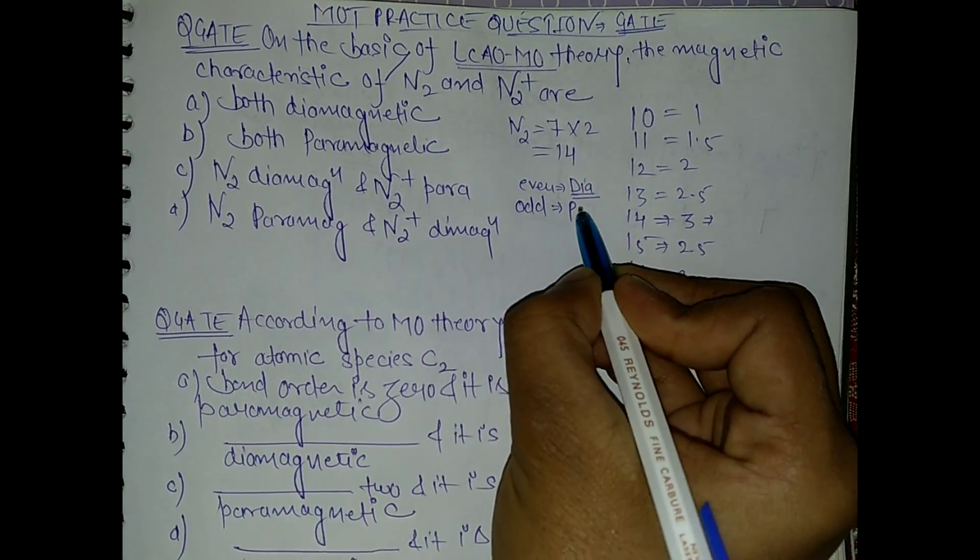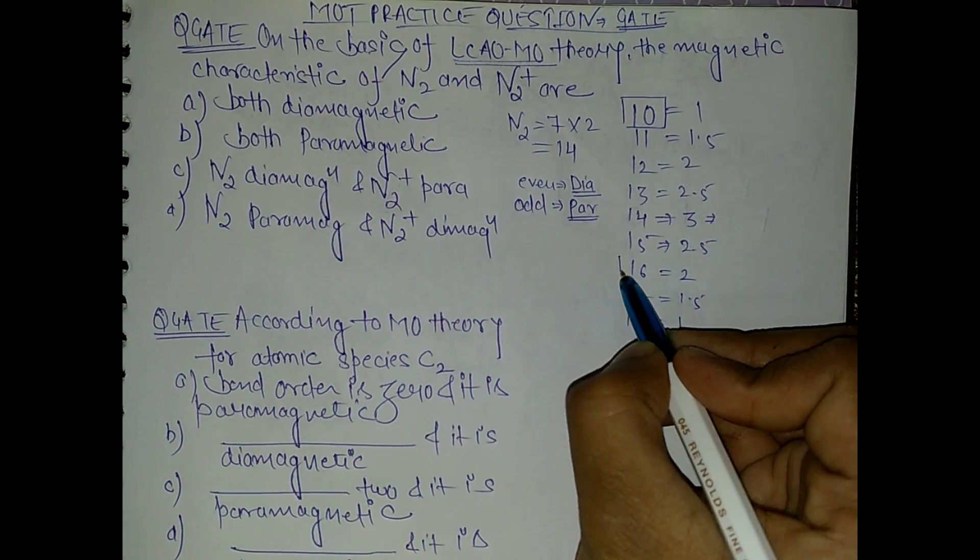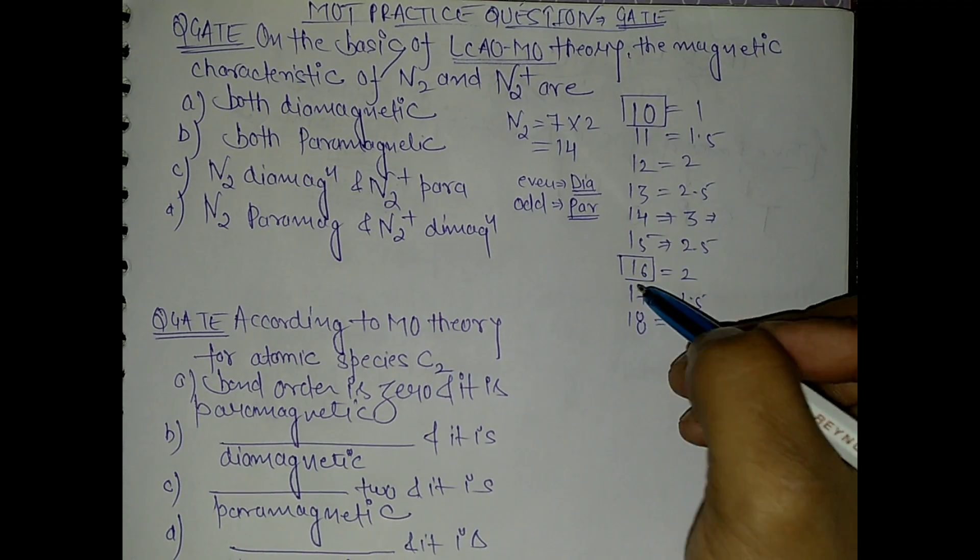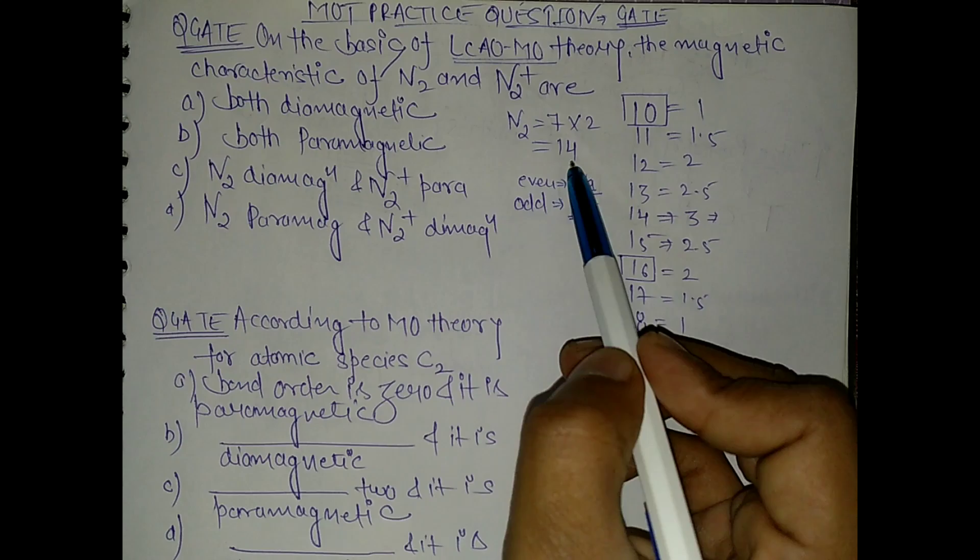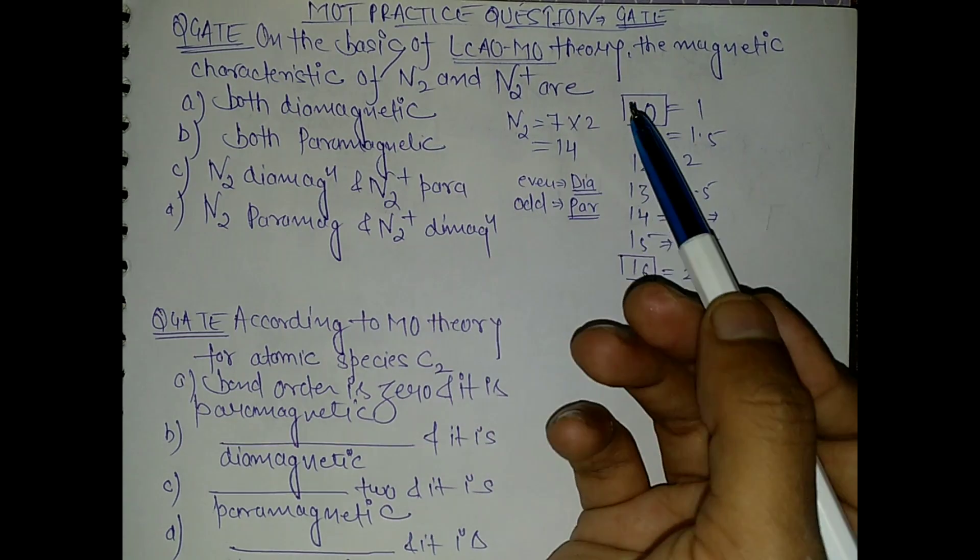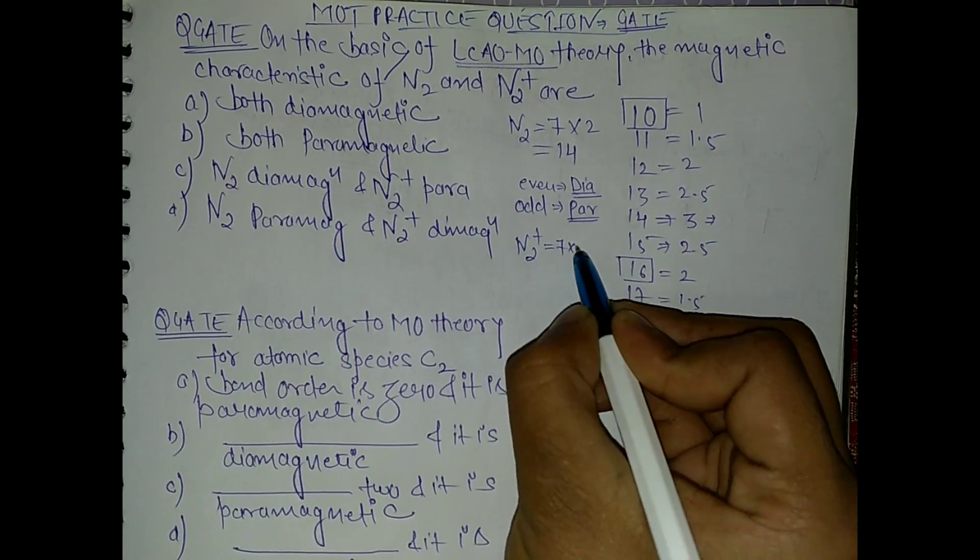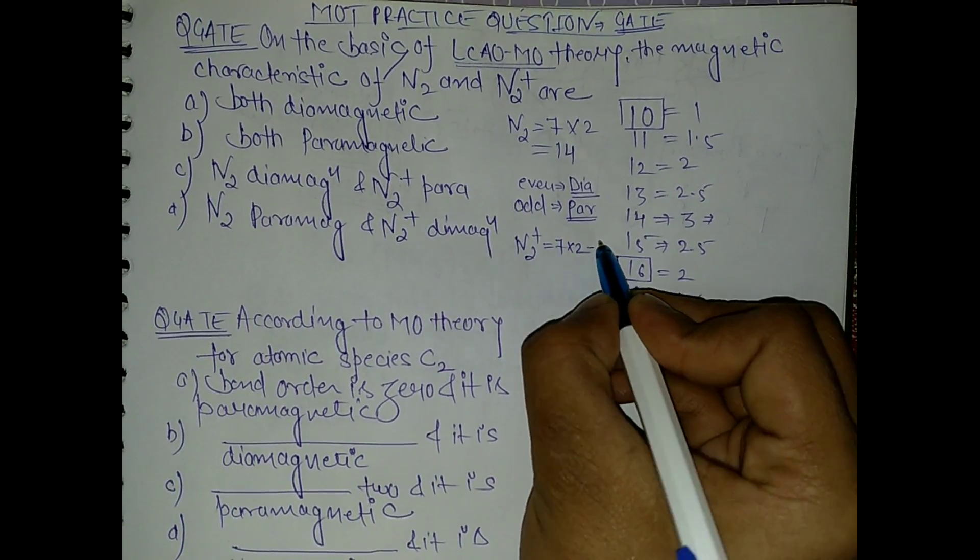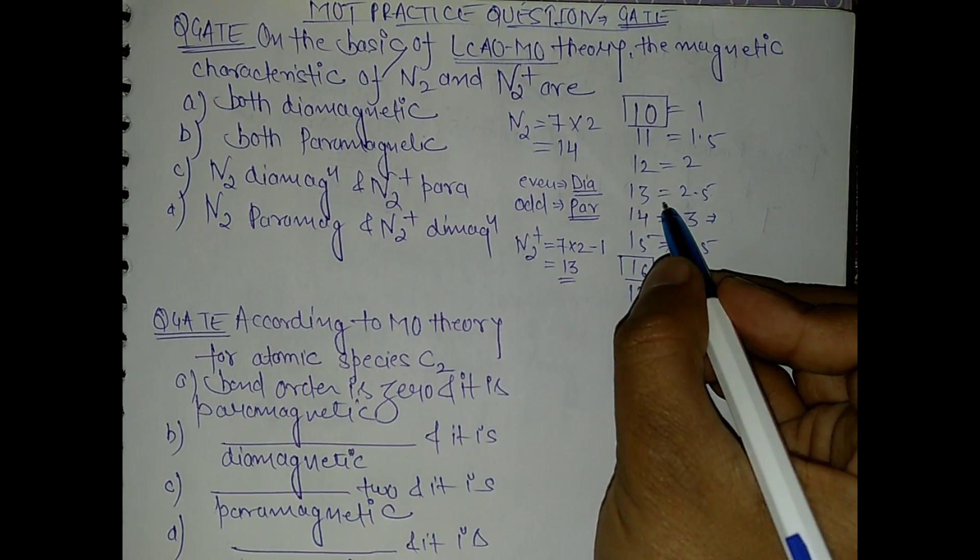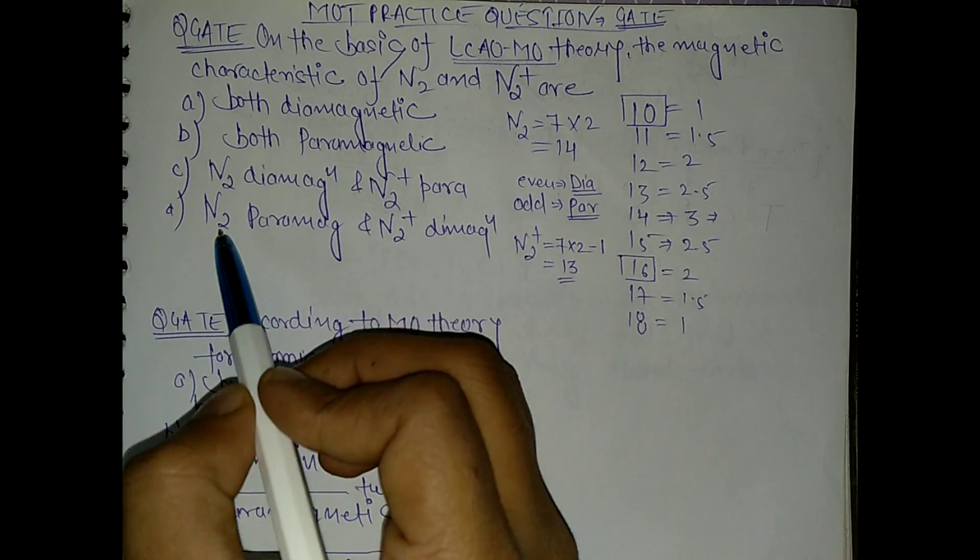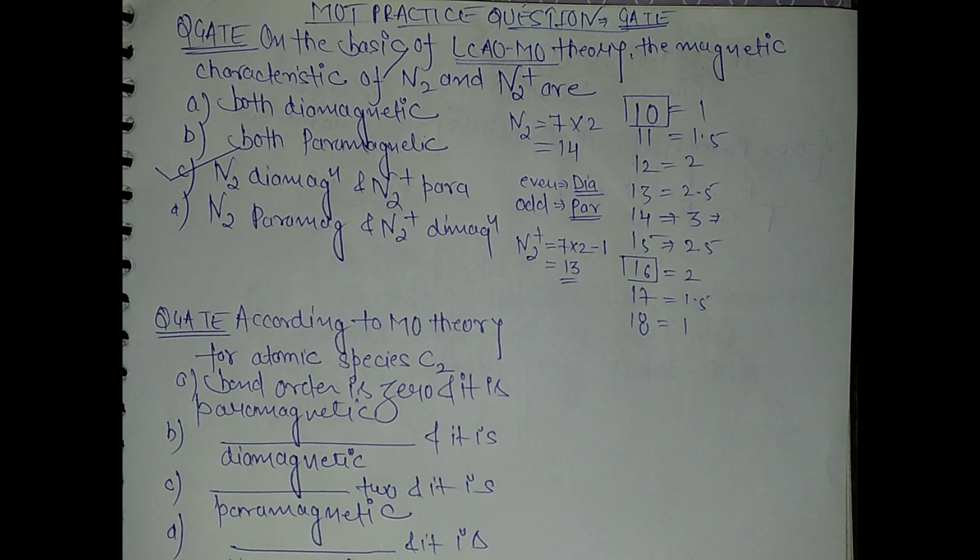And the only exception was this 10 and this 16. On these numbers, although they are even, we will get paramagnetism. Now see, N2 is 14, this is even, that means it is diamagnetic. And let's take N2 positive, so this is 7 into 2, positive means minus 1, so this is 13. So 13 is 2.5 and it is an odd number, so this will be paramagnetic. So N2 is diamagnetic and N2 positive is paramagnetic, so C is the right answer.